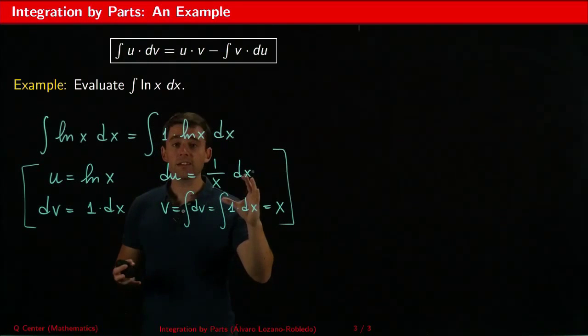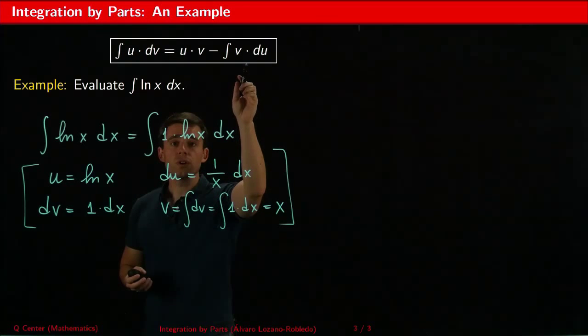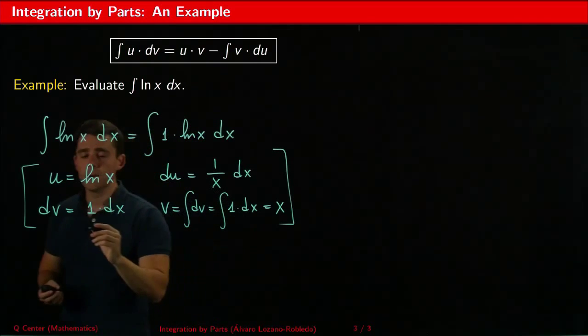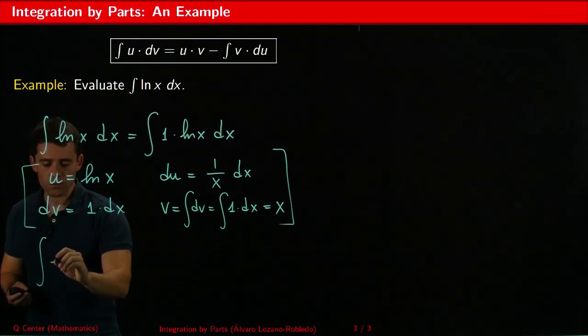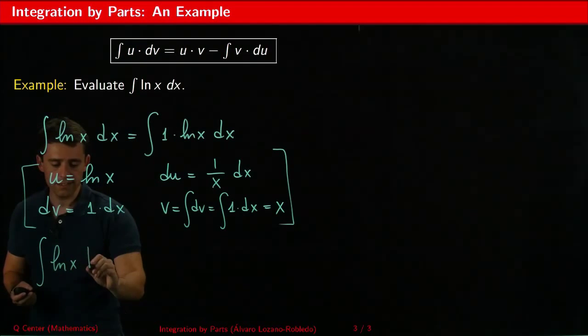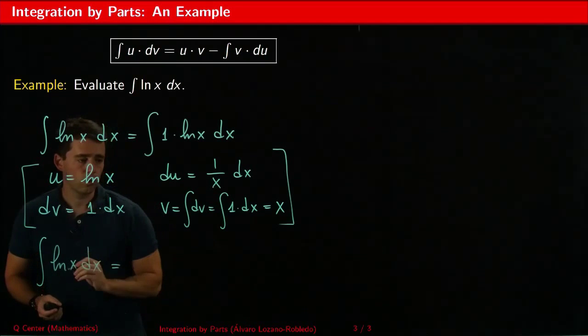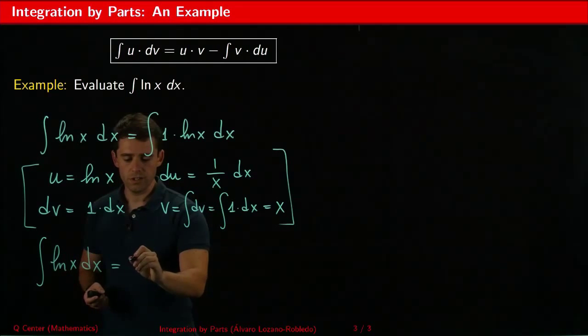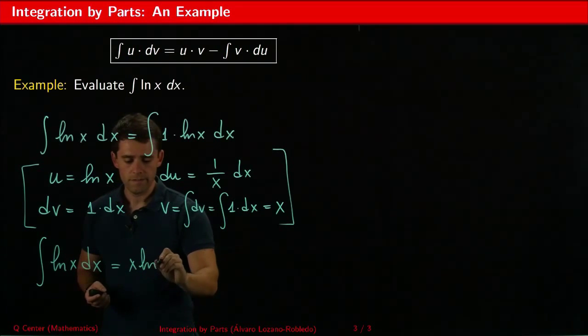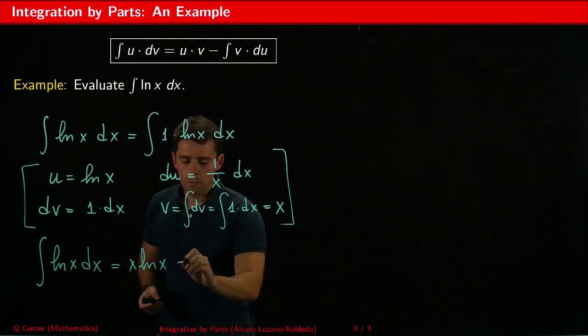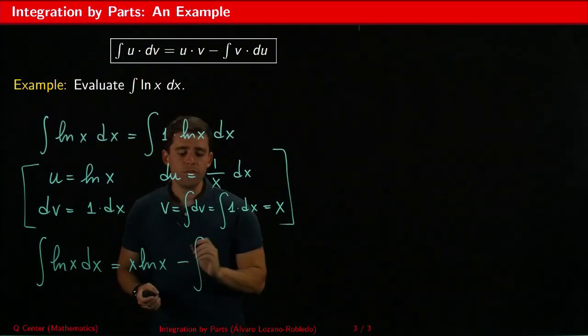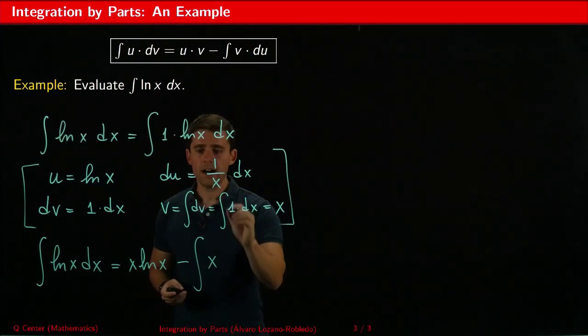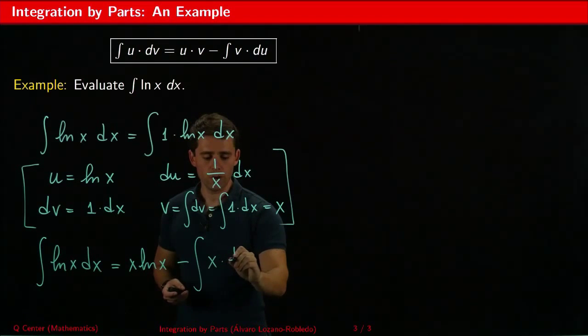And now you can finish off the integral. The success of the method will hinge on whether I can calculate v du, the integral of v du. Let's see what that is. So the method of integration by parts tells me that ln x dx, the integral will be u times v. So here v is x and u is ln x minus the integral of v du. v du is 1 over x dx.